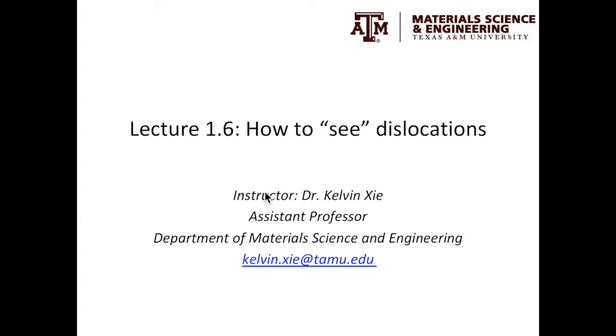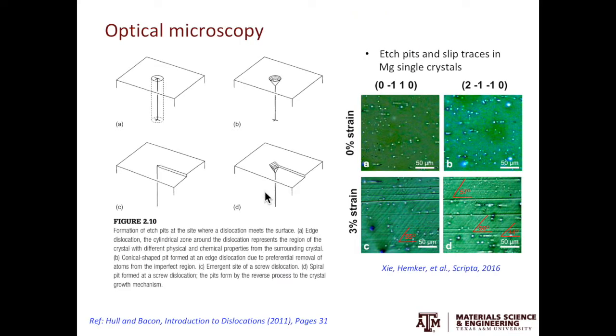The first technique is the cheapest one. You can use optical microscopy to see dislocations. When you have dislocations present in the material and the dislocation line terminates on the surface of the specimen, if you etch the specimen, you'll see etch pits. This is true for both edge dislocations and screw dislocations.